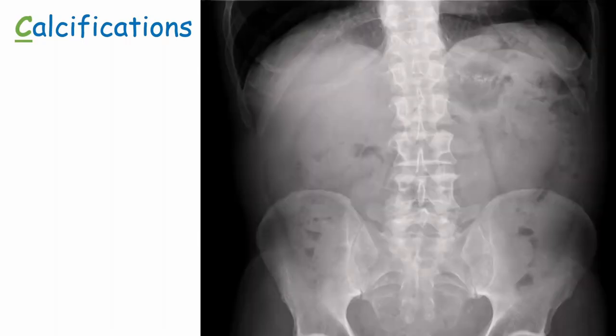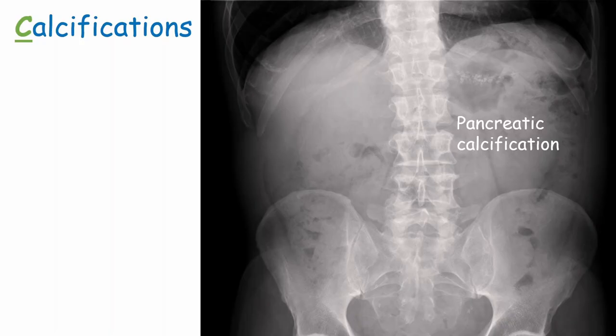Pancreatic calcification on an abdominal x-ray is usually a result of chronic pancreatitis and is a late sign of the disease.